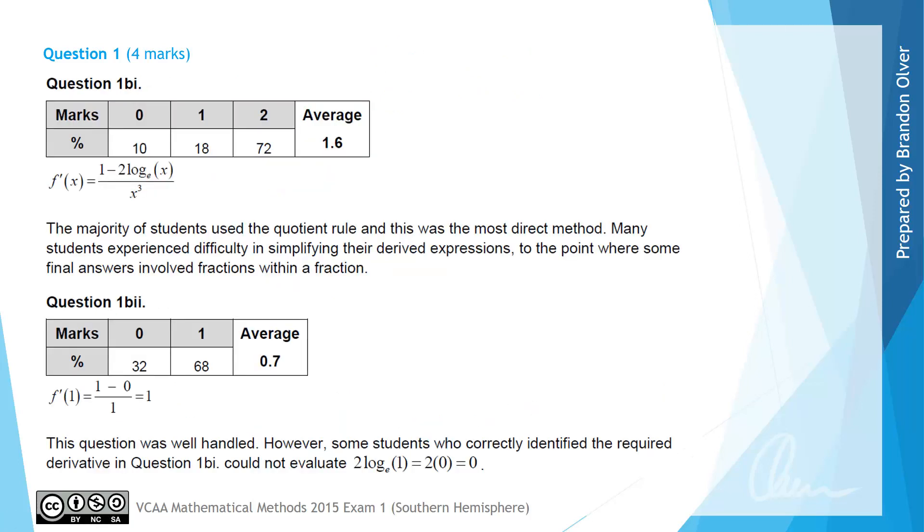From the examiner's report we can see that 72% of students got part 1 correct, and the majority of students used the quotient rule for this question. Although other methods could have been used, it was considered the most direct method. Many students experienced difficulty in simplifying their derived expressions to the point where some final answers involved fractions within a fraction.